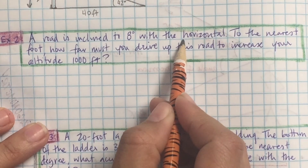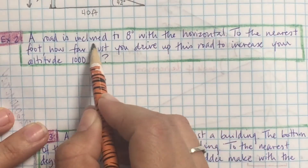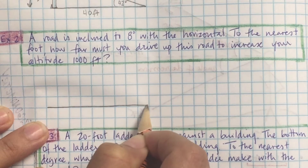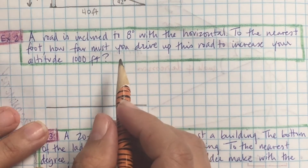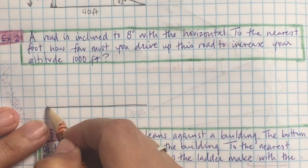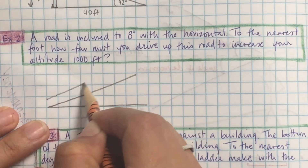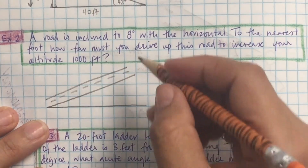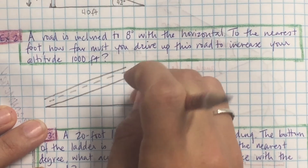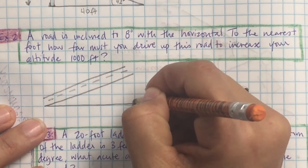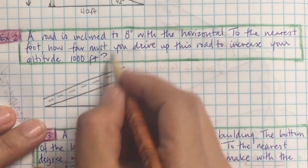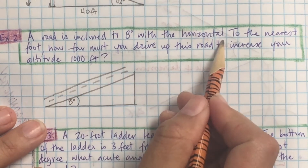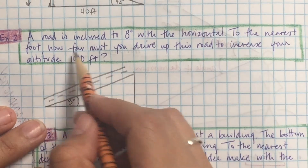A road is inclined 8 degrees with the horizontal. So I'm going to draw a road — it's slanting — and here's my horizontal line, which is a straight line left and right. The space between the horizontal line and the road is at an 8 degree angle. Listening check: put a box around 8 degrees in the question and color it in.